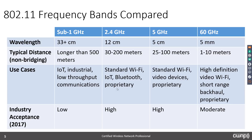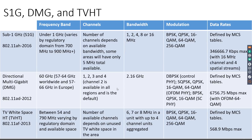We're also seeing 802.11ax stuff in consumer space first. Enterprise vendors tend to say, let's wait and see how it works in consumer space before putting it on production networks. So let's now talk about S1G, DMG, and TVHT PHYs in overview.